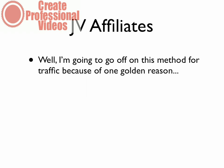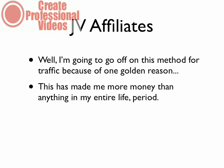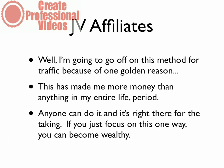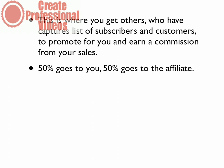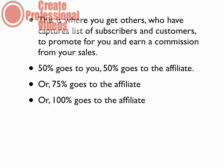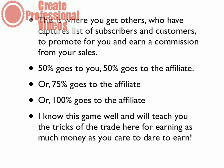Another way to get traffic is joint venture affiliates. I'm going to go deep on this method because it has made me more money than anything else in my entire life — we're talking millions. This is where you get other businesses who have lists of subscribers and customers to promote for you and earn a commission. For example, 50% goes to you and 50% goes to the affiliate as commission — or even 75% or 100% commissions can go to the affiliate. I know this game well and I will teach you the tricks of the trade for earning as much money as you dare to earn.